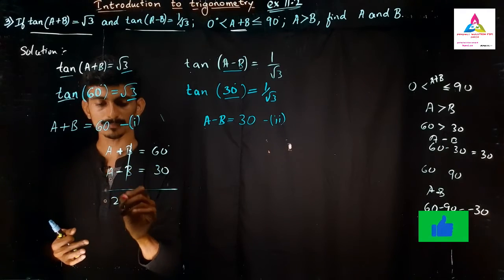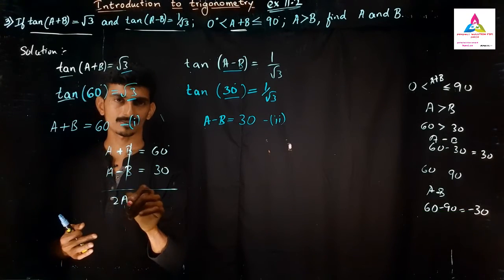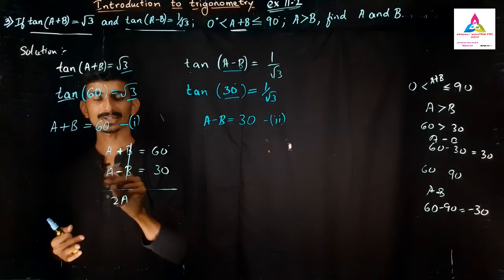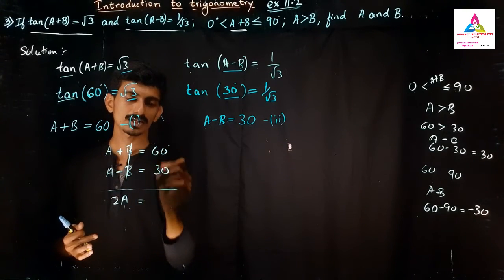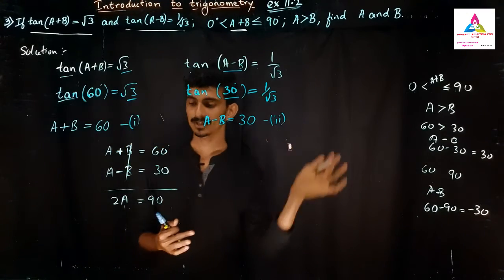And we have A+A is 2A. I am not subtracting, I am adding it. If we will subtract it, A gets cancelled, B+B is 2B it will be. So 60 and 30, how to add them? So 2A is equal to 90 degrees.